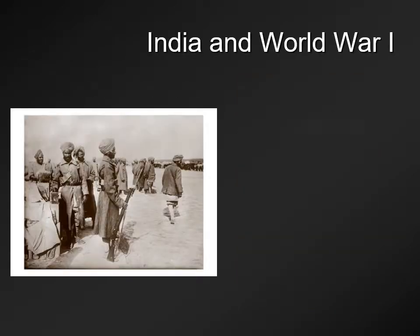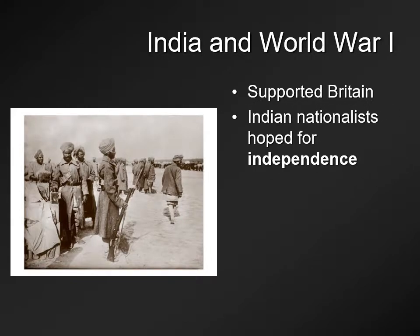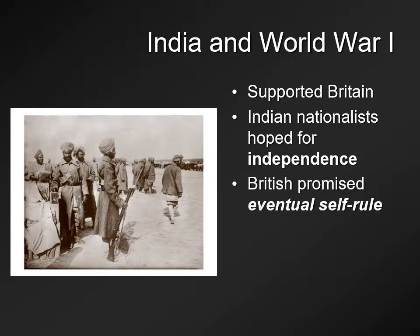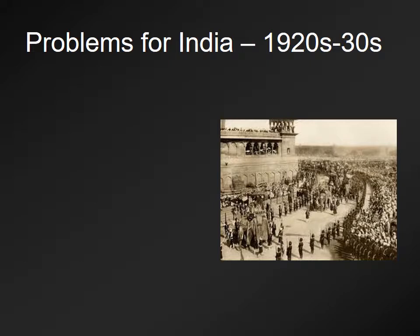Not surprisingly, there were sporadic uprisings and attacks — often called terrorism — against British targets in India. This continued until World War I, when Indian nationalists calling for independence said, let's have a truce and support Britain during their war, hoping to be rewarded with independence. The British response was: help us out and we'll promise you eventual self-rule — a wide-open term. As the teens turned to the 20s and 30s, unrest and problems in British India continued.